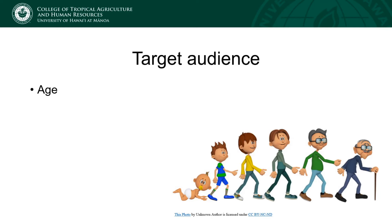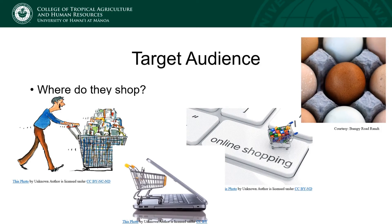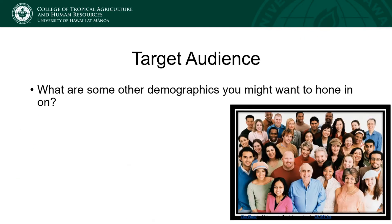Where do they shop — are they online shoppers, in-store shoppers, or do they shop at farmers markets? Do they do some combination of all three and what's the breakdown? What are some other demographics you might want to hone in on? Is it income? What do they like to eat — are they vegetarians, vegans, omnivores, or pescatarians? There are all different kinds of eating patterns, especially relevant for those in agriculture and livestock.